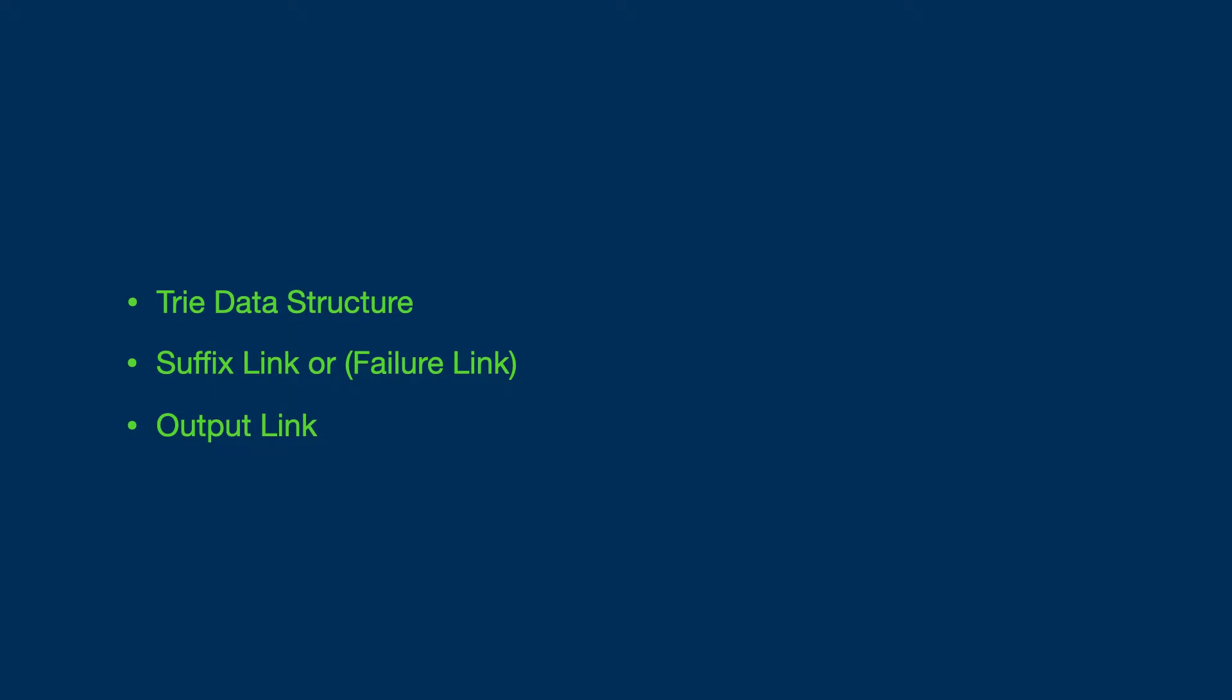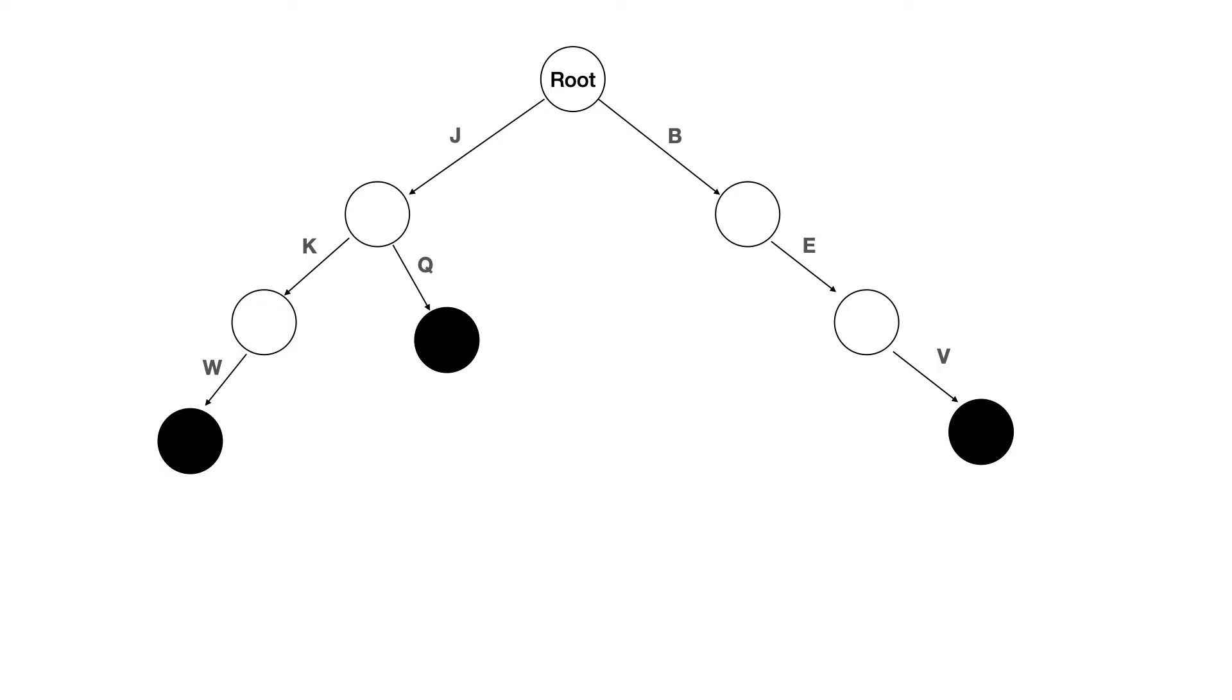Next, we go on to learning about suffix link or it is also known as the failure link and output link together. I just drew a simple automation of Aho-Corasick and just took some random values like jkw, jq, bev and jw. I didn't draw jw on purpose because to show you that there is a failure case and what we can do during the failure case. Let's go through this.